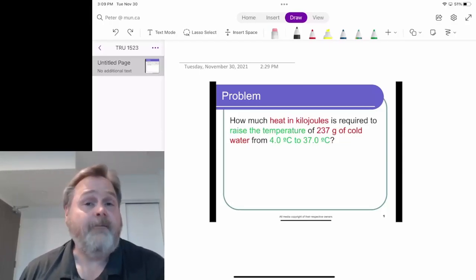Why is this a common everyday occurrence? Well, 237 grams of water is about one cup or eight ounces, which is the size of one small drinking glass. Additionally, water at 4.0 degrees Celsius has likely come from the refrigerator because that tends to be about the temperature that most refrigerators store their contents. And 37.0 degrees Celsius is human body temperature.